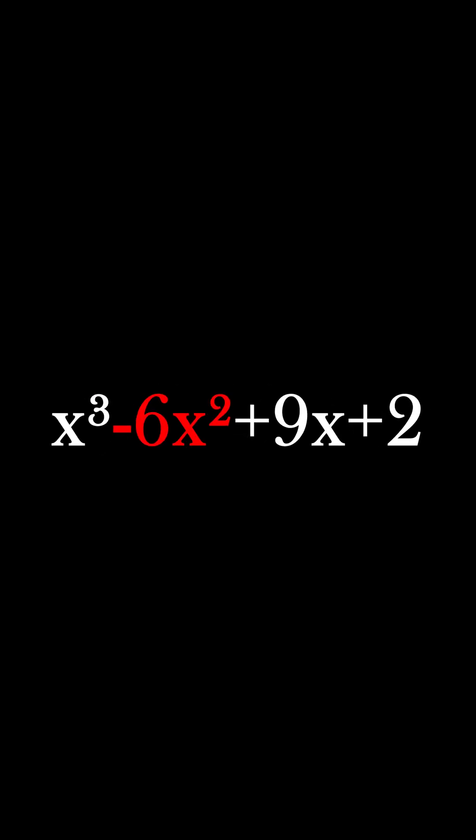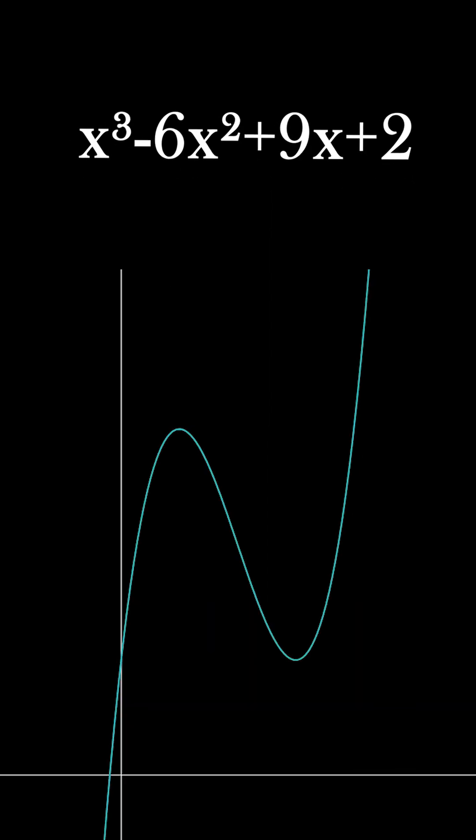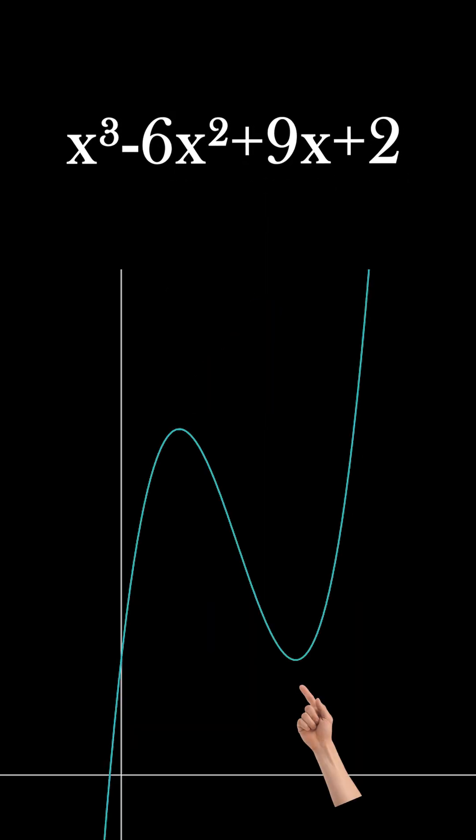Alright, let's say we have this equation right? x cubed minus 6x squared plus 9x plus 2. It's a nice cubic function with two turning points.